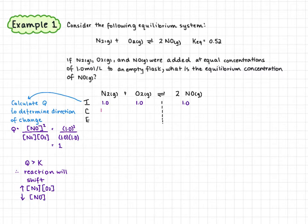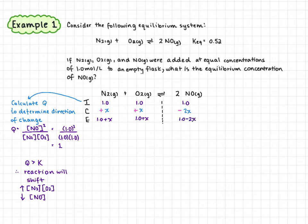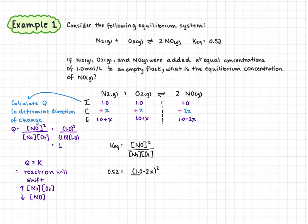When we fill in our ACE table, our reactants will have a positive change and our product will have a negative change. We're going to use x's here, so this is going to be plus x, plus x, minus 2x. On the reactant side we have 1 plus x, and our product side will have 1 minus 2x. When we plug this into our equilibrium expression, Keq equals NO squared over N₂ times O₂, and because N₂ and O₂ have the same concentration, we can write the denominator as 1 plus x squared.